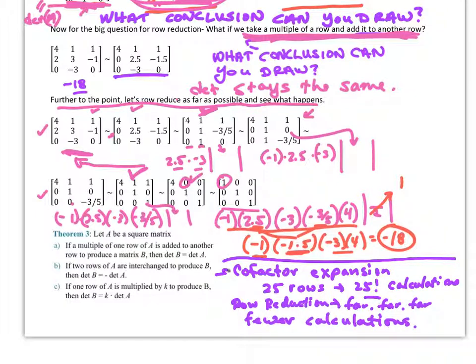Now why would we do this? One of the reasons is for you computer programmers if you have to program and do cofactor expansion. For instance, if you have 25 rows and columns, you're going to have possibly 25 factorial calculations. I don't know if you know what this number means, but try putting that into your calculator. It's a huge number. And so for a computer to calculate that, it's going to take years. However, row reduction, a computer can do row reduction far easier than they can do cofactor expansion. And so it's going to be far far fewer calculations for the determinant. That's why.